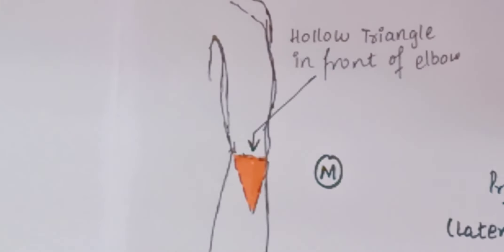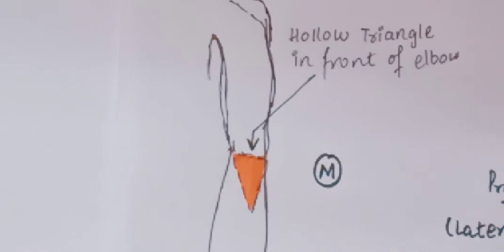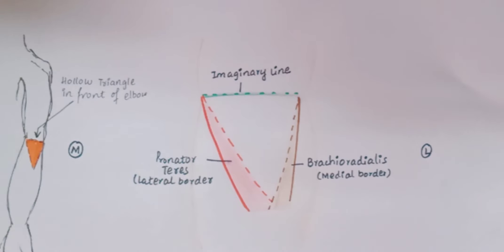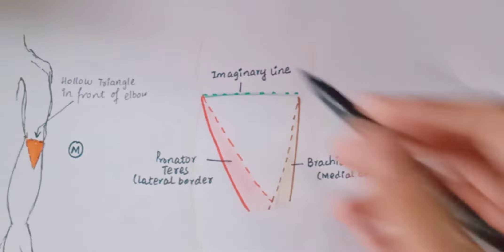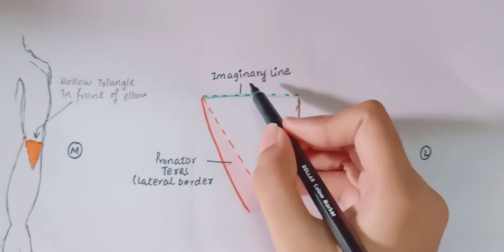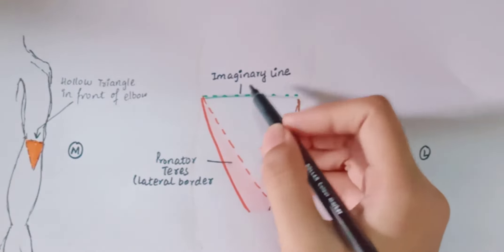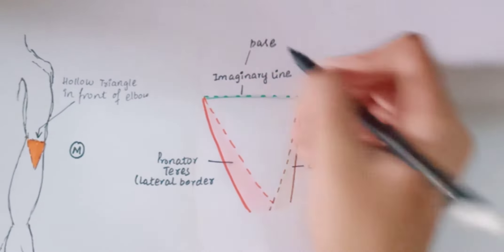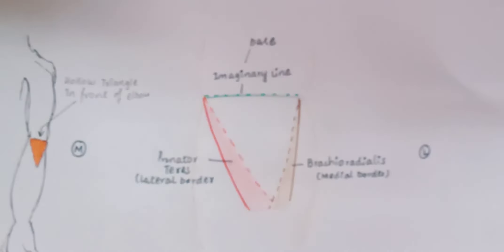The cubital fossa is a hollow triangle in front of the elbow. The base of the cubital fossa is formed by an imaginary line, and the apex of the cubital fossa is formed where the two muscles cross each other.